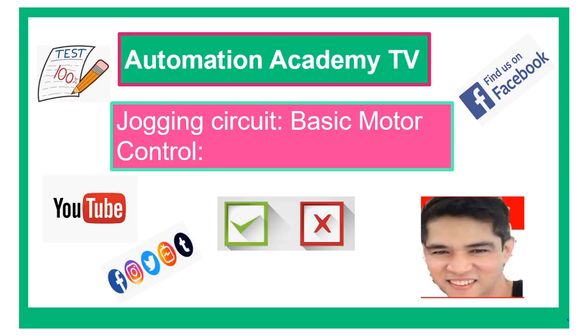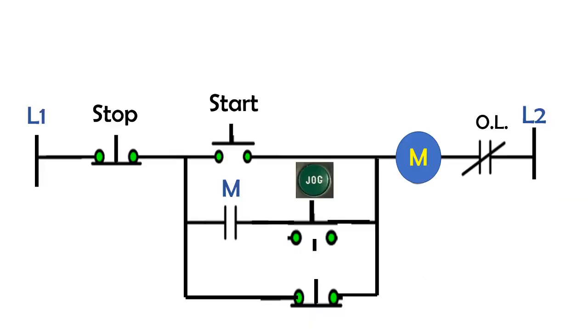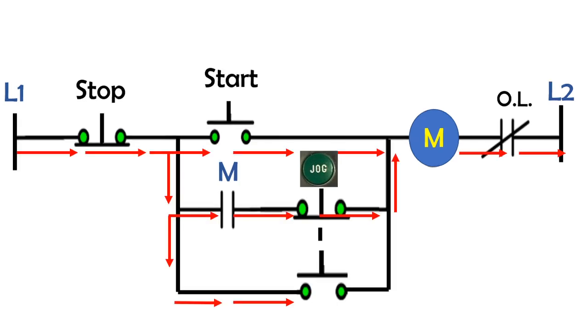Our tutorial for today is jogging circuit basic motor control. Jogging is the process that uses quick power to move a motor or load, like a conveyor, into a desired position. According to NEMA (National Electrical Manufacturers Association), jogging is a quick repeated closure of a circuit to start a motor from rest for the purpose of accomplishing small movements of the driven machine. Let's get started.